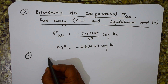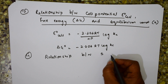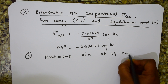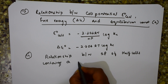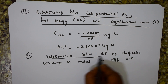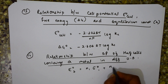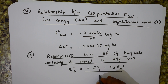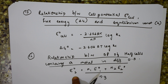Another formula is for the relationship between standard potentials of half-cells containing a metal in different oxidation states. The formula is: E°₃ = (n₁·E°₁ + n₂·E°₂) / n₃, where E°₁ and E°₂ are the potentials of the two half-cell reactions, and E°₃ is the potential of the third half-cell.